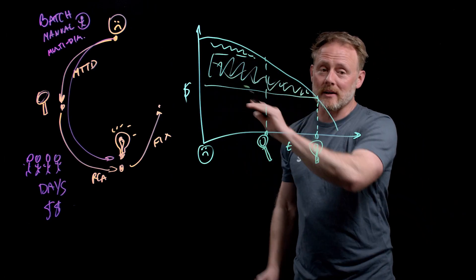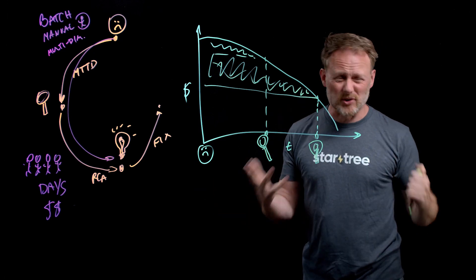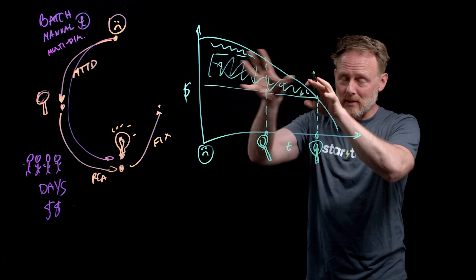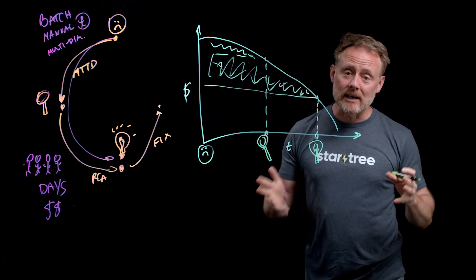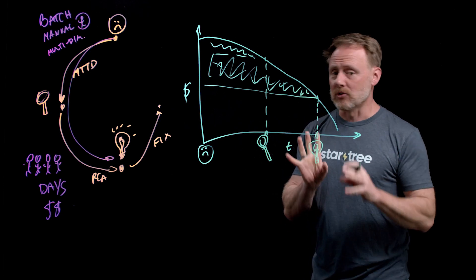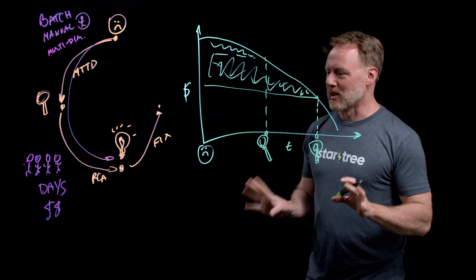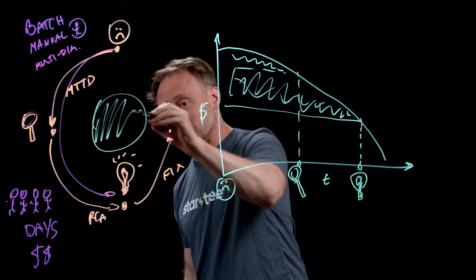This is bad. All this shaded area here, that's money that just evaporates because we didn't know something was broken and it took us a long time to figure out. So that is the heart and soul and the motivating factor behind automated anomaly detection, like what StarTree ThirdEye does. So that's super important. There's something even scarier though, before we finish.